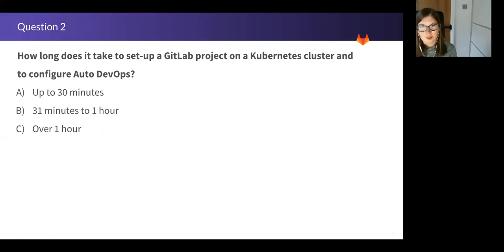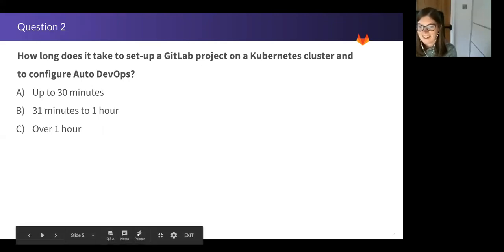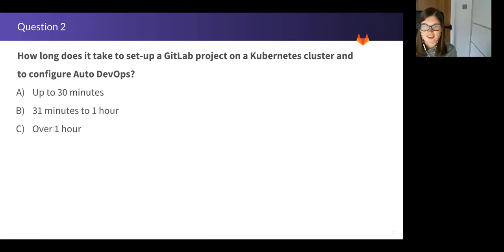So Rebecca says B, Chris says C. OK, three seconds, two seconds, one. OK, time's up. So if you said A, up to 30 minutes, you'd be completely wrong. If you said C, over one hour, you'd be correct. It actually took Mark one hour and four minutes.